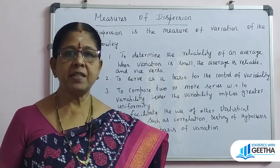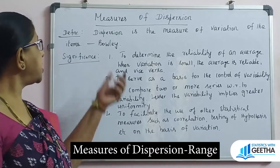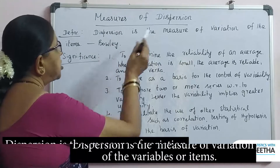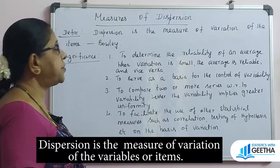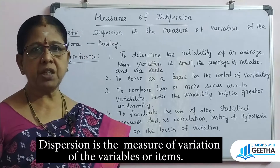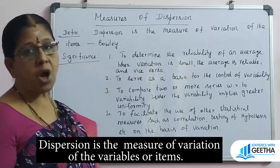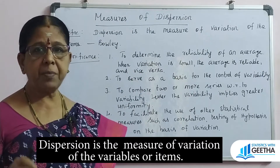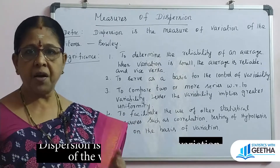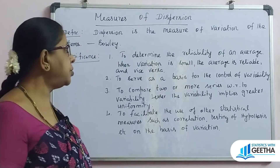Hello, welcome to my channel Statistics with Geeta. Today we are going to see measures of dispersion. This is also from one variable. Dispersion is the measure of variation of the items — items here means the observations. We are going to see the measurement or degree of the observations, how they are varying from each other from a particular average. So the variation among the observations we are going to study.